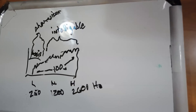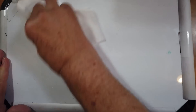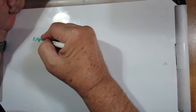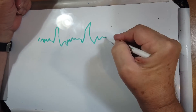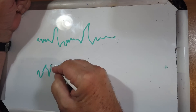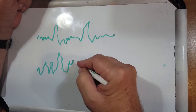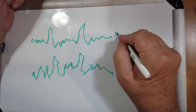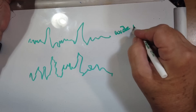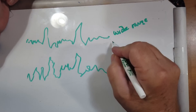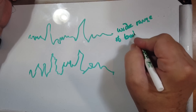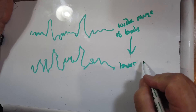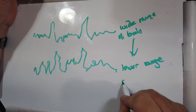Let's talk about compression. Here's what compression does: if you've got a speech waveform that varies widely, compression raises the lower parts and lowers the higher parts. In other words, it takes a wide range of levels and converts them to a lower range of levels.